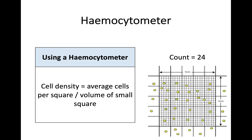Finally, to calculate the cell density, you divide the cells you've counted — depending on what the question asks, it might be the entire square or only one part — by the volume of that area. Once you have that, it gives you the cell density of the chosen volume.